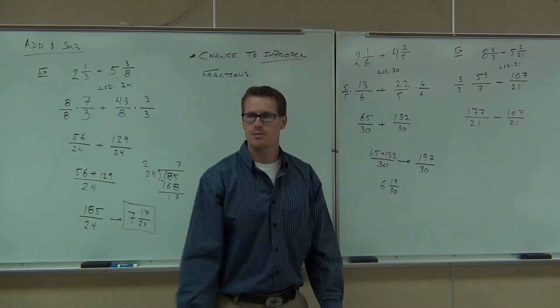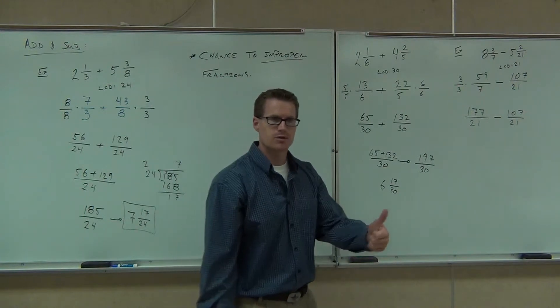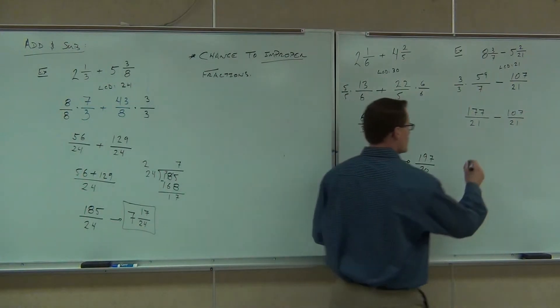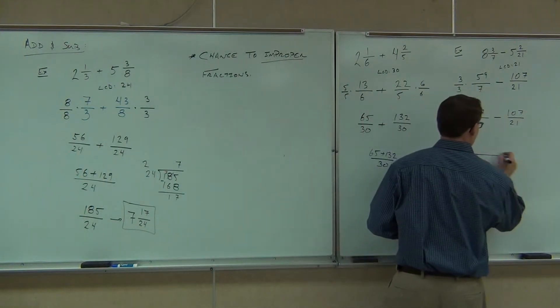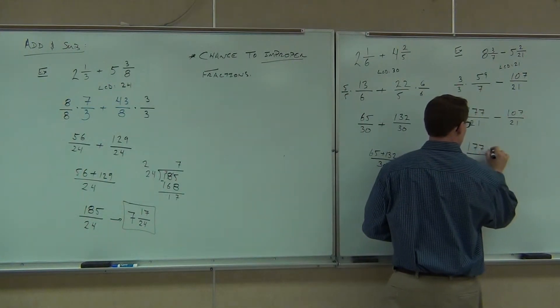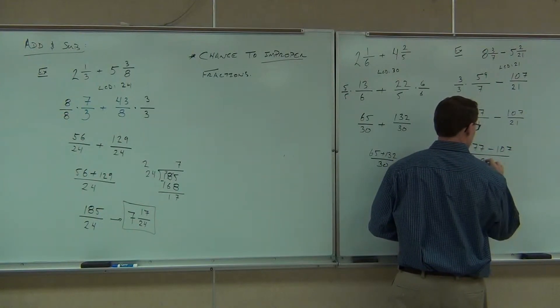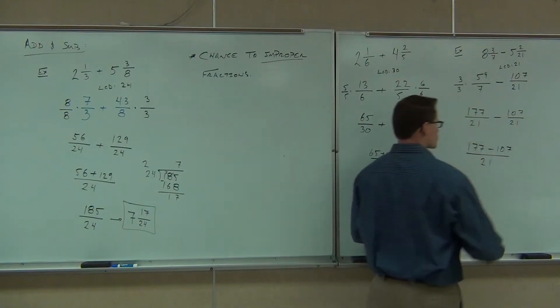What do we have to multiply? Three. I know it's going to be over 21. What's this number? 177. So 177 over 21. Notice that all we're doing is dealing with a little bigger numbers. We're still doing the same exact thing. Do I have the common denominator? Yes. I'm good to go. Let's make one fraction. We're going to have 177 minus 107 over 21.